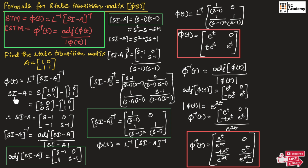To find (SI - A), we take S multiplied by the identity matrix and subtract matrix A. So we write [S, 0; 0, S] minus [1, 0; 1, 1]. Subtracting these two matrices, we get (SI - A) equal to [S-1, 0; -1, S-1]. It is a direct subtraction.